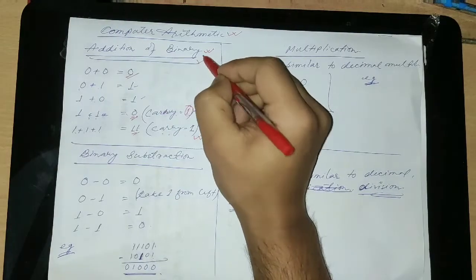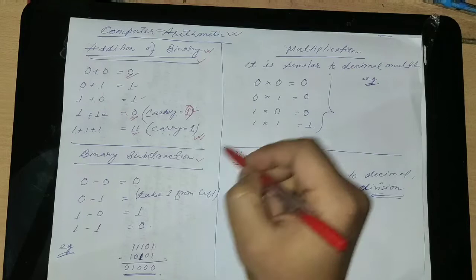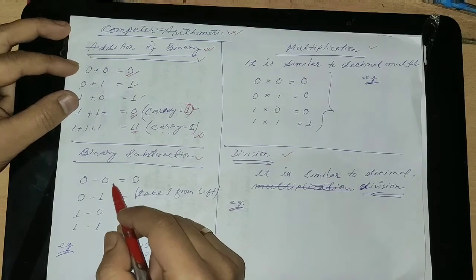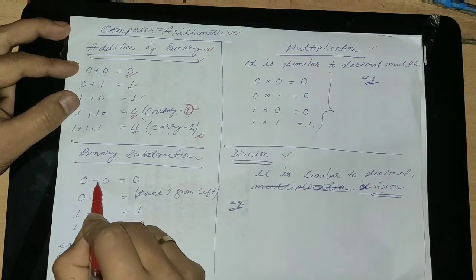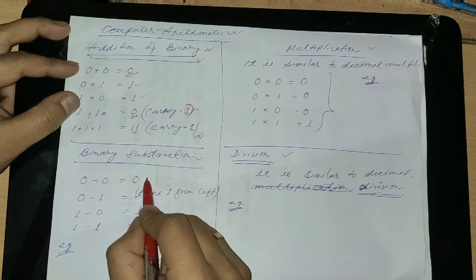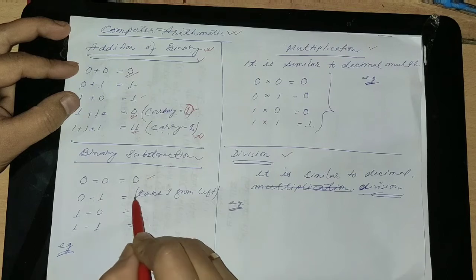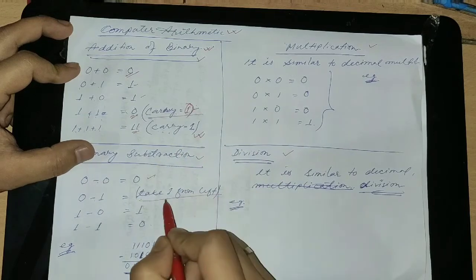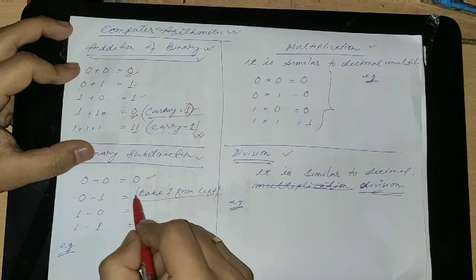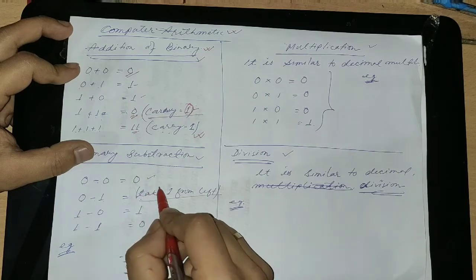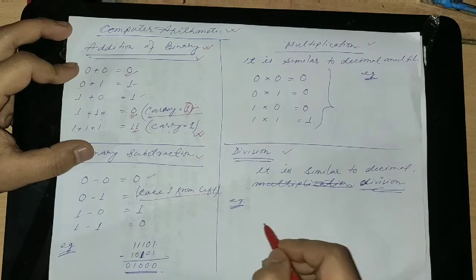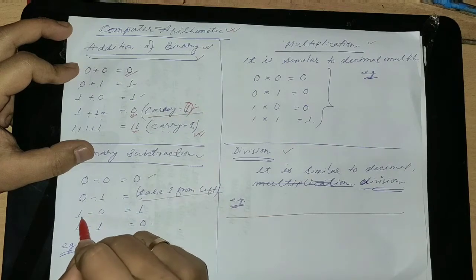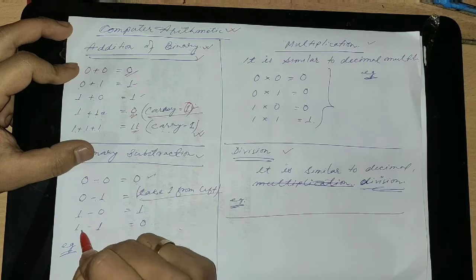Here I have given the addition, but binary subtraction, multiplication, and division. The subtraction method of binary computer language is: when 0 is subtracted from 0, it is equal to 0. Whenever 0 is subtracted from 1, you have to keep in mind that whenever 0 is subtracted from 0, then 1 from the left hand side comes to 0. I will give an example later on.